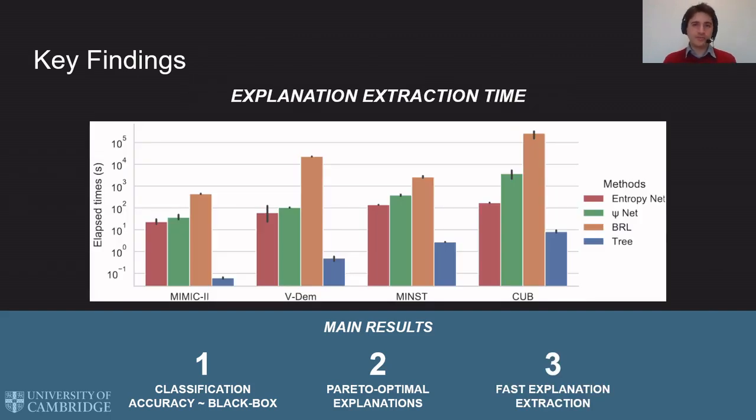And third, the explanation extraction from ELENs is two to three orders of magnitude faster than state-of-the-art white boxes like Bayesian rule lists.